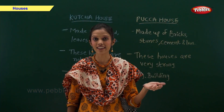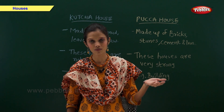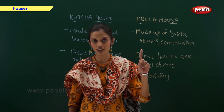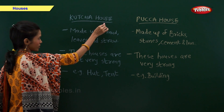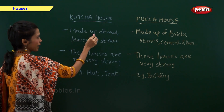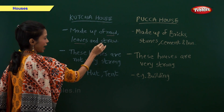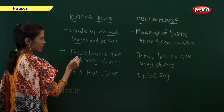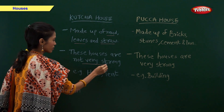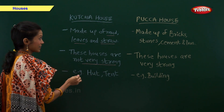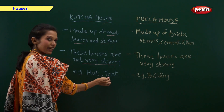Now let us learn in detail about Kaccha house and Pakka house. First, Kaccha house. A Kaccha house is made up of mud, leaves and straw. These houses are not very strong. An example of Kaccha houses are hut and tent.